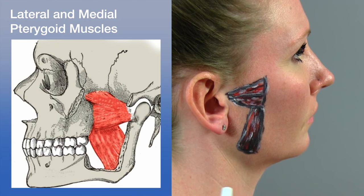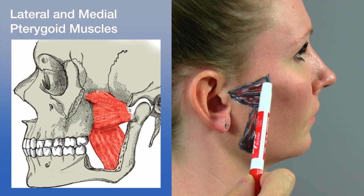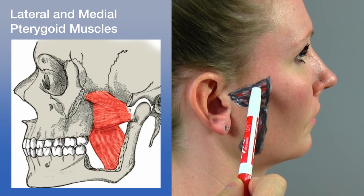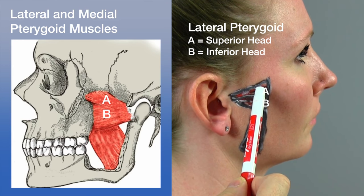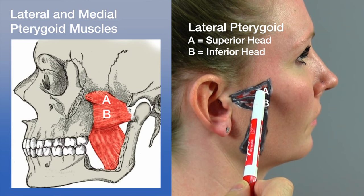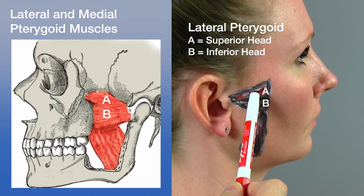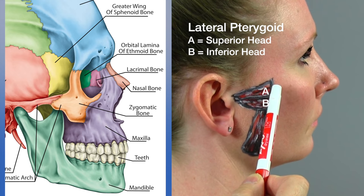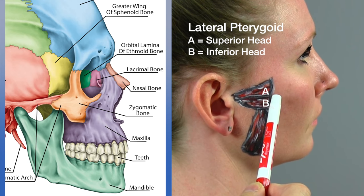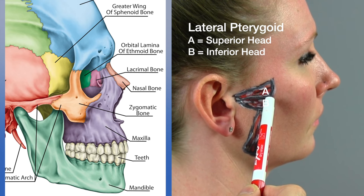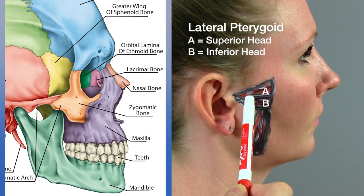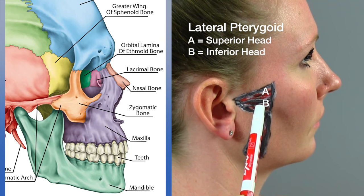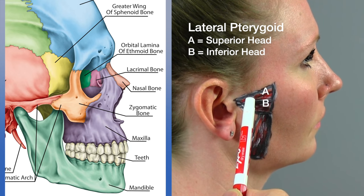Let's talk about the lateral and medial pterygoids. We can see on the superior section that we have the lateral pterygoid, with a superior head and inferior head. In terms of the attachments for the lateral pterygoid, we have the attachment from the sphenoid bone to the neck of the mandible, and the capsule and articular disc of the temporomandibular joint. This is really interesting because when you work on this structure, you're affecting the disc of the temporomandibular joint.